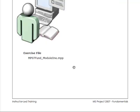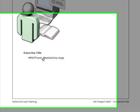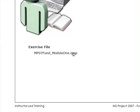Let's get started with Module 1. In Module 1, we want to become more familiar with the project environment. We'll initially start to work with views and become familiar with view types. So make sure that you have the MP07 Fund Module 1 MPP file downloaded off the website that I was referring to earlier, and go ahead and open that file up.